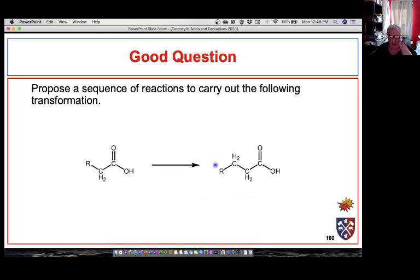Here are a couple of good questions that you might see on a midterm or assignment. Propose a sequence of reactions to carry out the following transformation. Look at what's going on here, we're basically inserting a CH2 group in between this CH2 group and the carbonyl group. You now have all the toolbox of reactions that you need to elongate this carboxylic acid. You're going to have to use a little bit of chemistry that you learned in organic one but you should be able to figure it out. The first part of the chemistry you're going to use is something we learned this year.